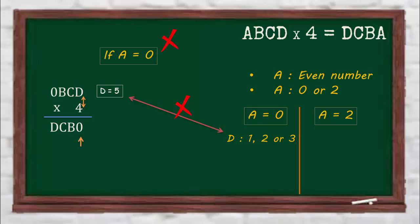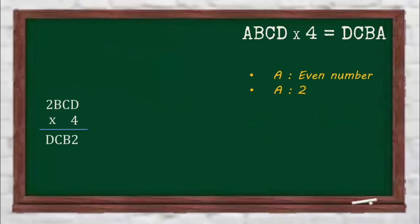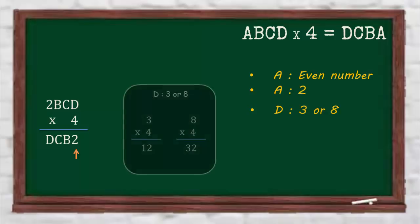And finally we conclude that A is equal to 2. The units place of the output is 2, so the value of D is either 3 or 8.